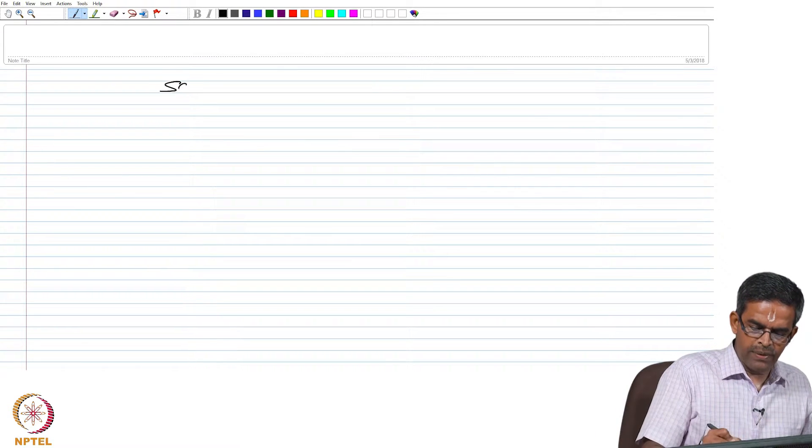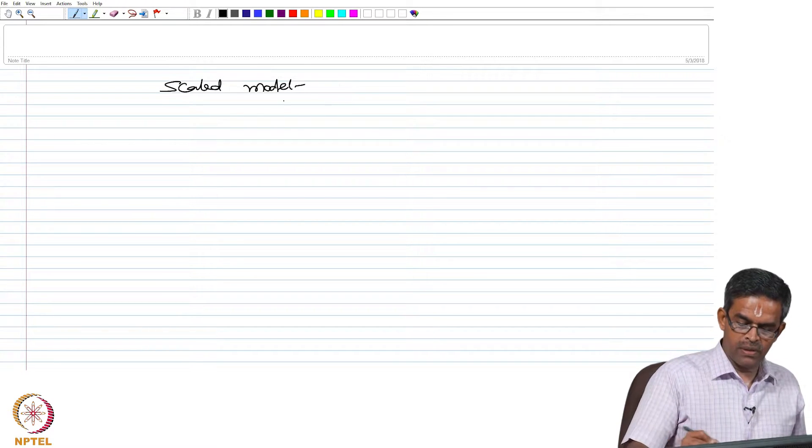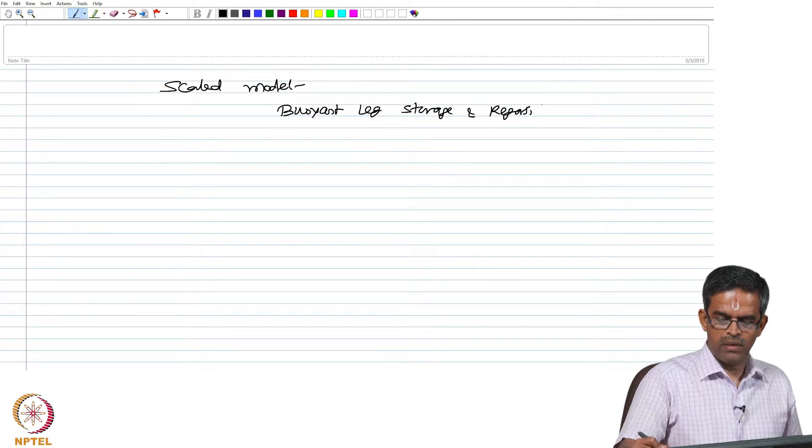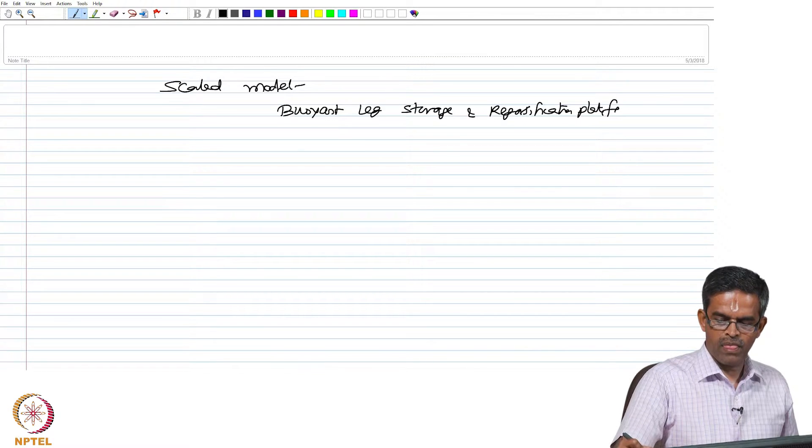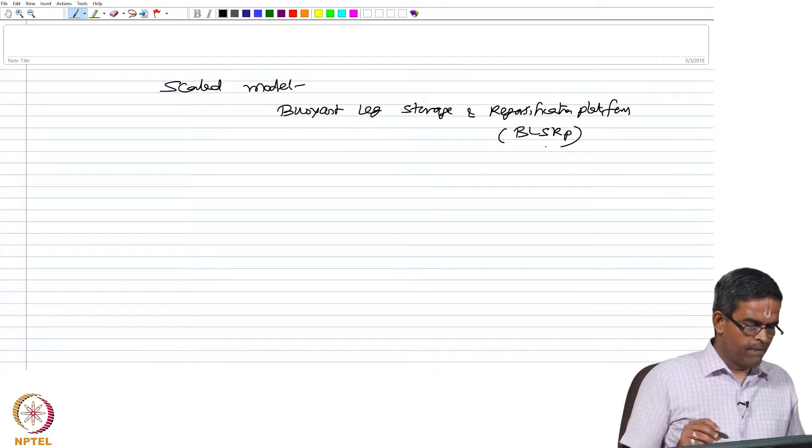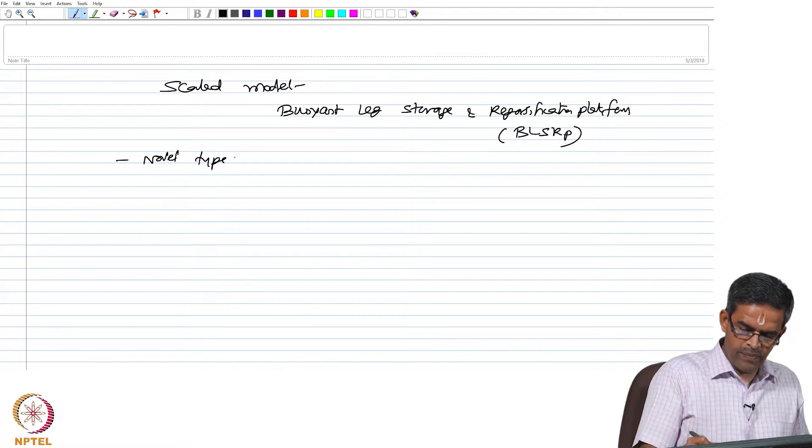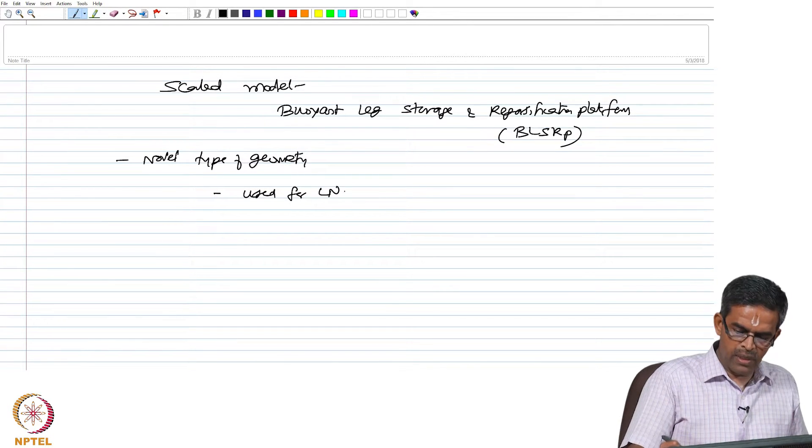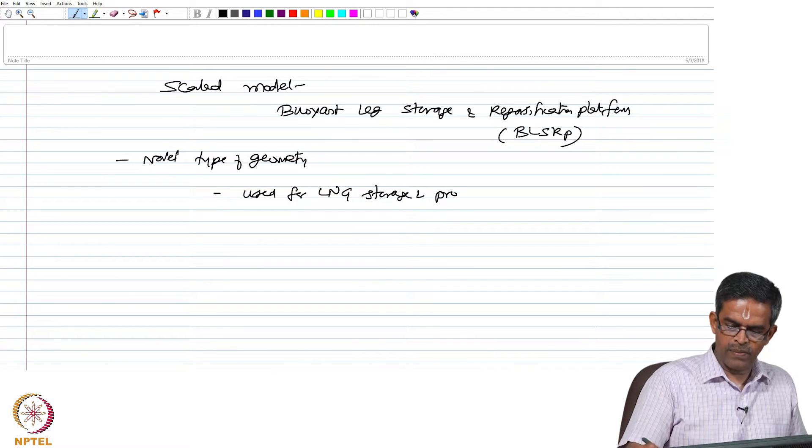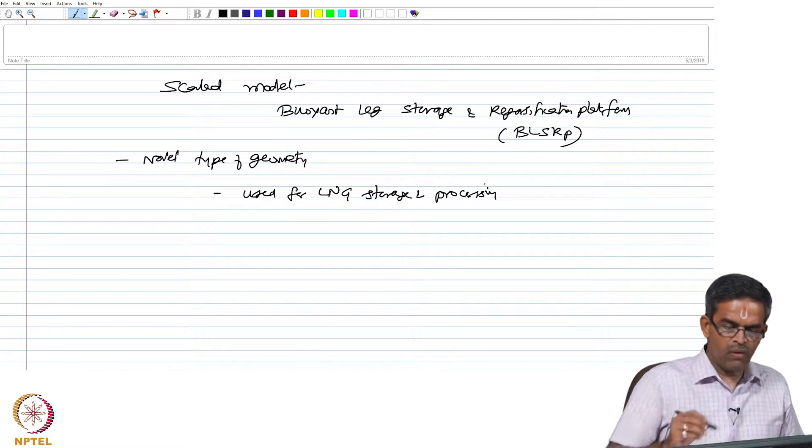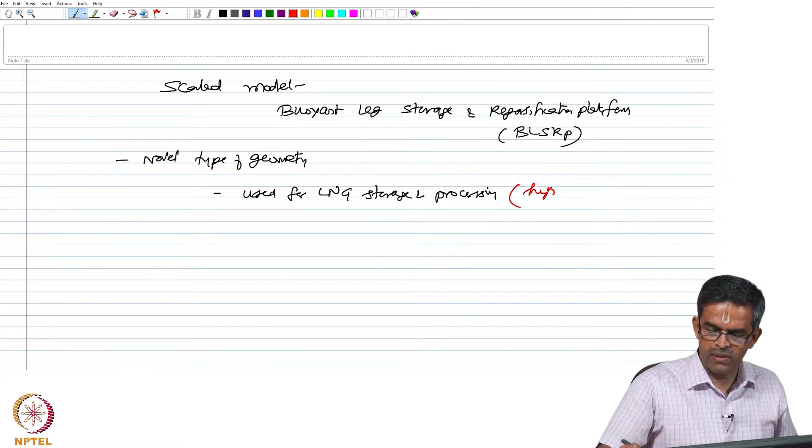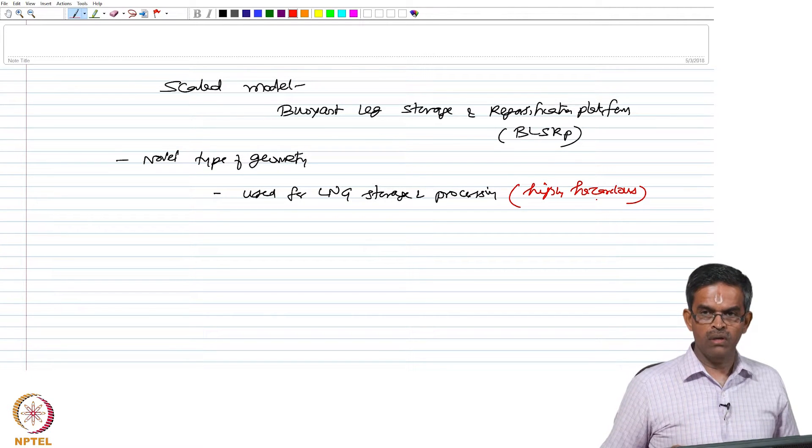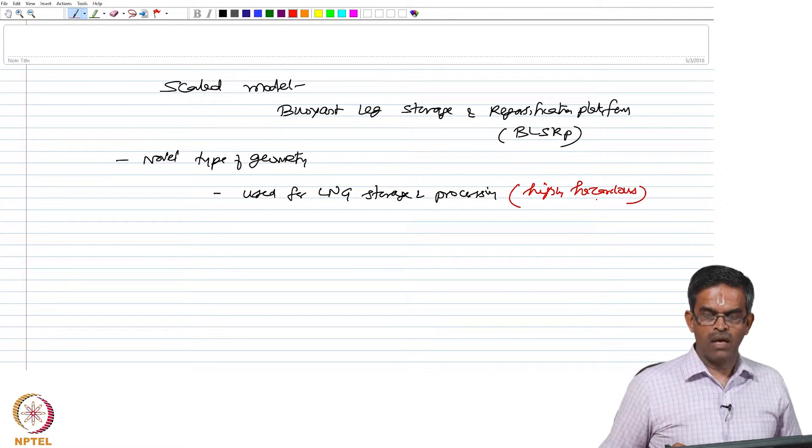The scaled model being examined is buoyant leg storage and regasification platform, abbreviated as BLSRP, which is a novel type of geometry used for LNG storage and processing. LNG storage and processing is highly hazardous, so health monitoring using wireless networking will be the most efficient tool, providing continuous autonomous unmanned monitoring.